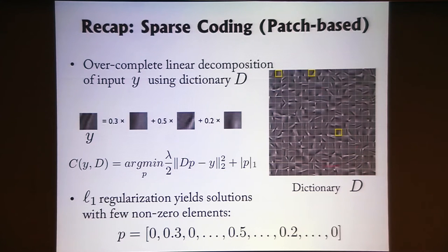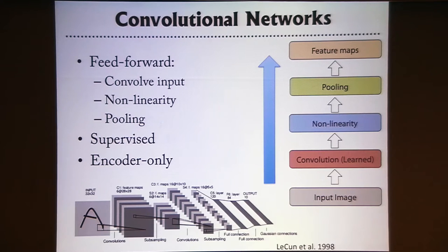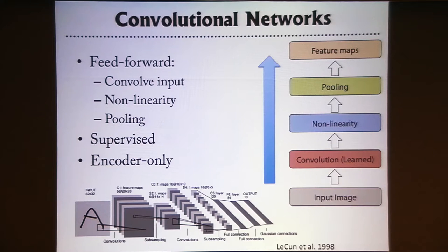To explain convolutional nets, it's easiest to start with the opposite: a convolutional neural net. In a ConvNet, you take your input image, convolve it with learned filters, apply an element-wise non-linearity, do some pooling, and that gives you feature maps for one layer. You repeat this for multiple layers. It's essentially feed-forward, going from the input image up to feature maps in a series of closed-form operations. It's supervised — trained with backpropagation from label information. You can think of this as an encoder-only representation.